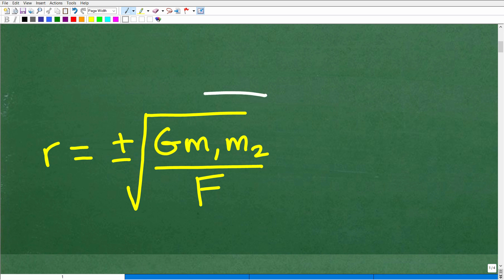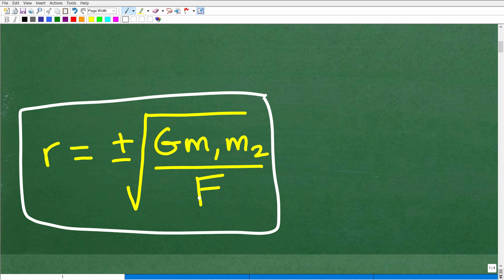R is going to be equal to plus or minus the square root of G times M1 times M2 over F. All these particular variables I just described to you what they mean. But if you got this right, that is fantastic.